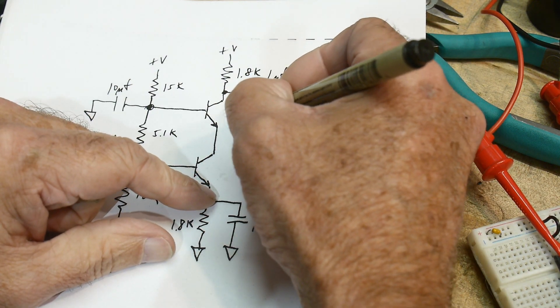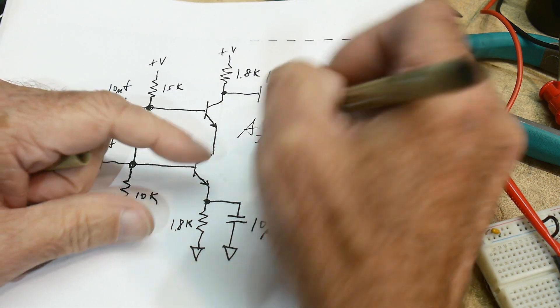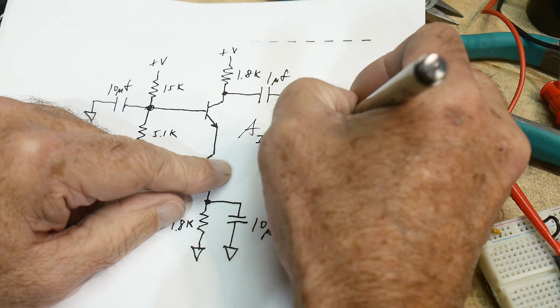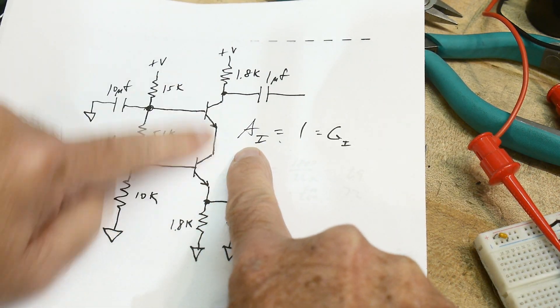So it's usually said A current gain equals 1. Or the gain, current gain is 1.